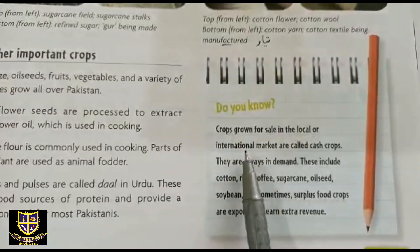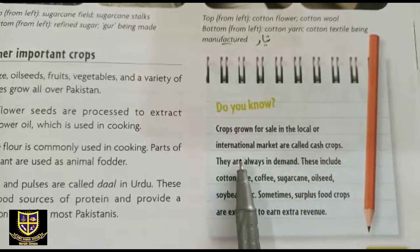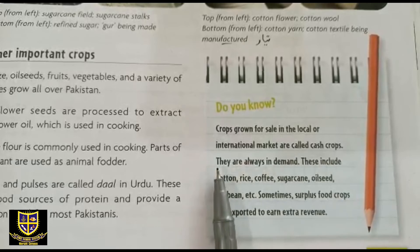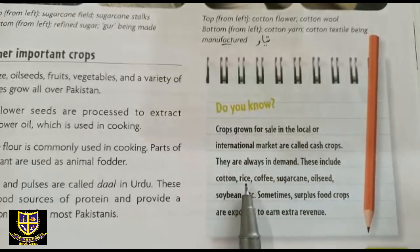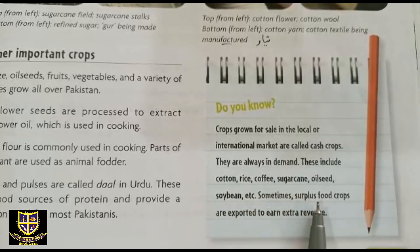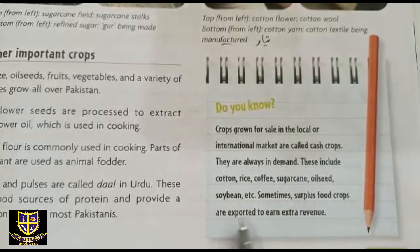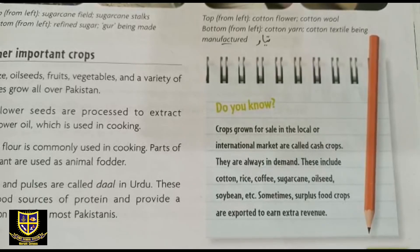Crops grown for sale in local and international markets are called cash crops — they are always in demand. These include cotton, rice, coffee, sugar cane, oil seeds, and soya beans. Some of the surplus food crops are also exported to earn extra revenue. یعنی یہ فصلیں جو ہیں وہ ہمارے ملک میں بیچنے کے لئے اور export کرنے کے لئے کاشت کی جاتی ہیں۔